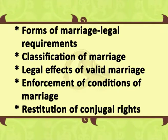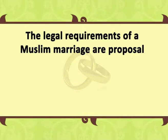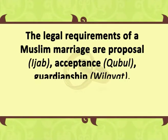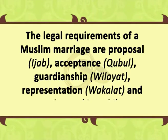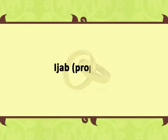The legal requirements of a Muslim marriage are: proposal i.e. ijab, acceptance i.e. kabul, guardianship i.e. vilayat, representation i.e. wakalat, and witness i.e. gawahi. Ijab i.e. proposal: the intended marriage between two persons should first be proposed by or on behalf of either party thereto. This is called ijab.